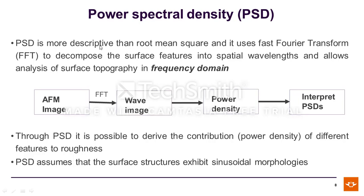I want to illustrate the steps you take to go from an image to obtaining data using PSD. Power spectral density is more descriptive than root mean square. It uses the fast Fourier transform theory to decompose the surface features into spatial wavelengths, and it allows analysis of surface topography in the frequency domain.